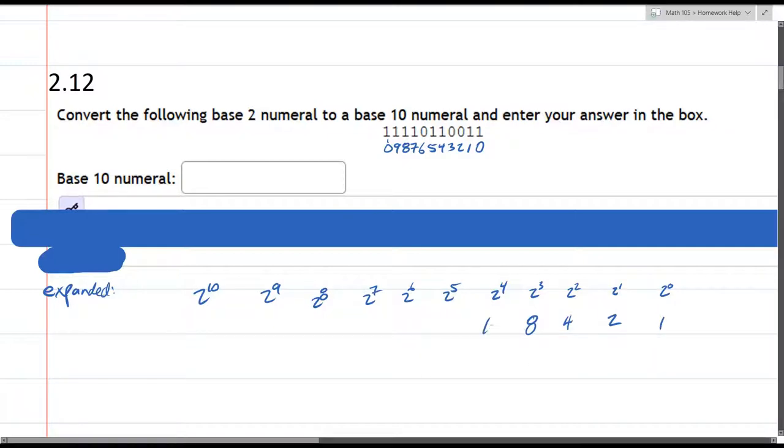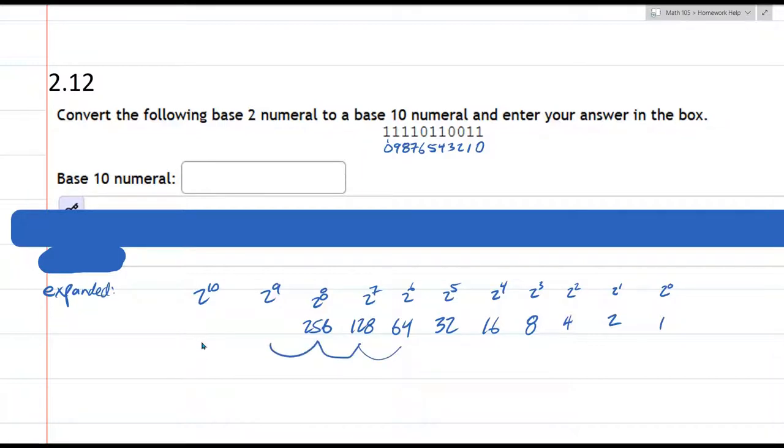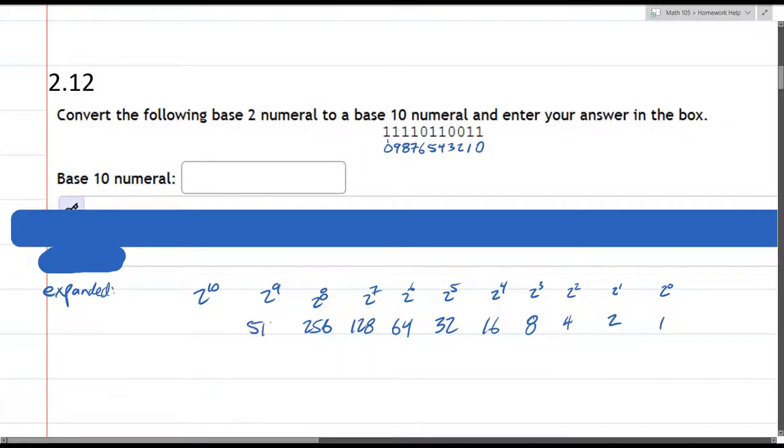So 8 times 2 is 16. Double that to 32, 64, 128, 256. If you're using a calculator, you just keep multiplying by 2 again and again. 512, and 1024. So these are all the powers of 2.